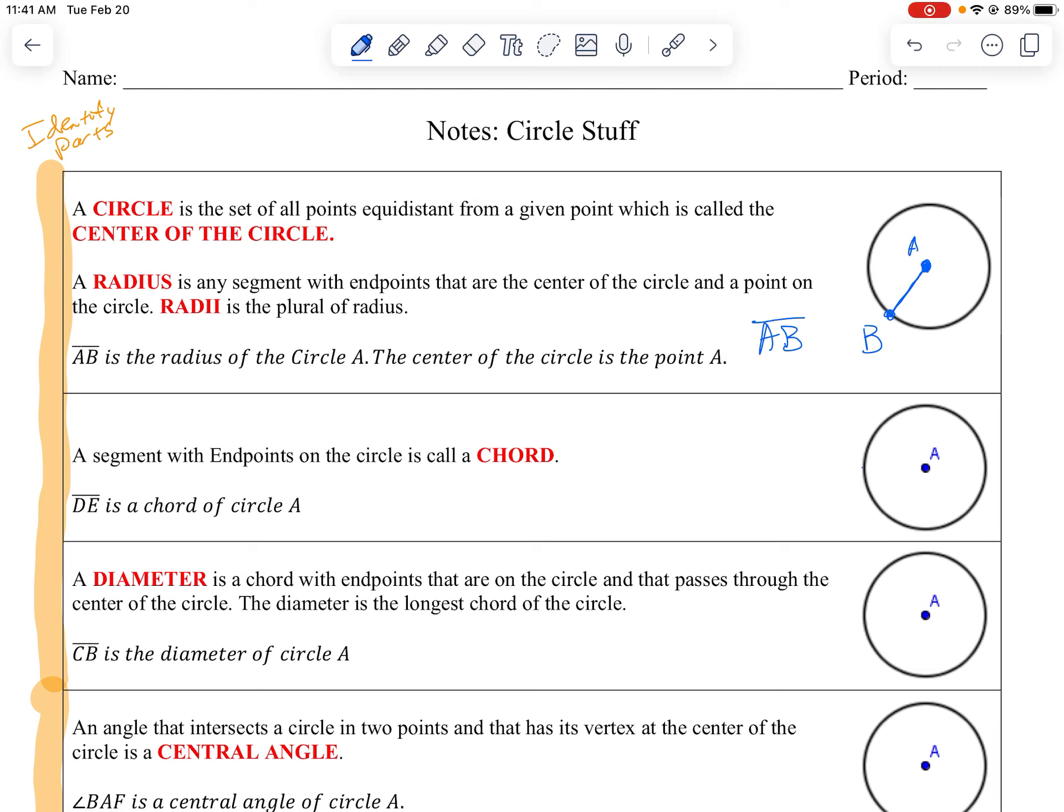The next thing is called a chord. A chord is just any line segment with the endpoints on the circle. So if I label this D and this E, then DE is a chord of circle A.